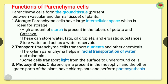Now let's see the functions of parenchyma cells. Parenchyma cells form the ground tissue present between the vascular and dermal tissue of the plant. Ground tissue is the tissue below the epidermis and above the vascular bundle — a sandwich-type tissue. The first function is storage: parenchyma cells have large intercellular spaces, which are ideal for storage.